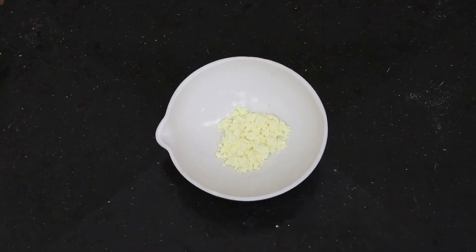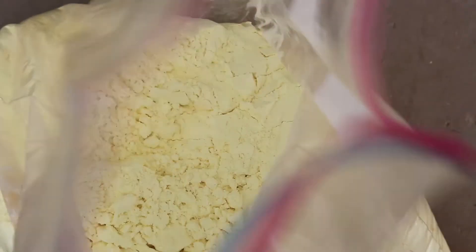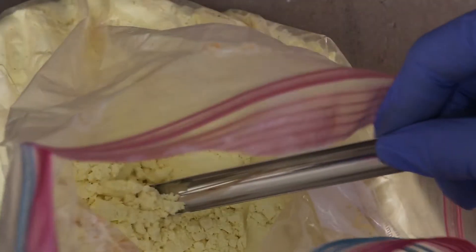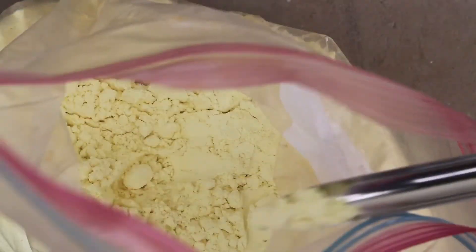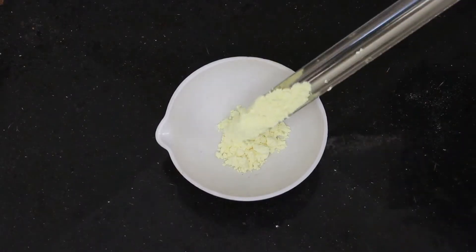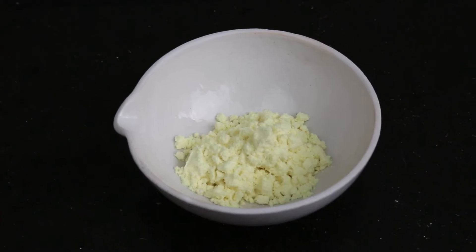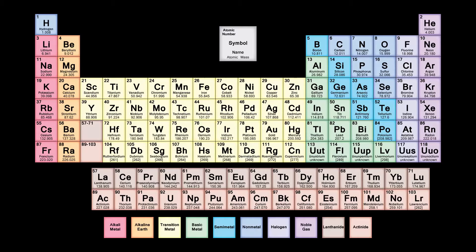Hey everybody, welcome back to Backend SI, and today I'm going to put my lungs on the line for 732 strangers. Today we're going to be looking at sulfur and one of its many unique allotropes. Sulfur is number 16 on the periodic table, right below oxygen, so you already know this is going to be a good video. Hashtag drop a like!